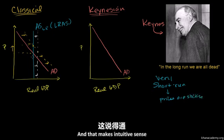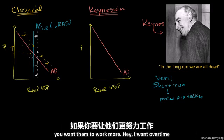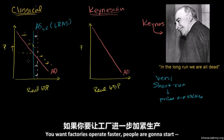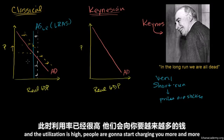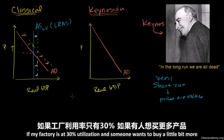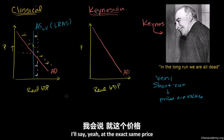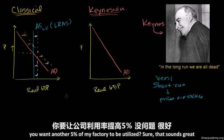And that makes intuitive sense. If the economy is starting to get overheated, people are being overworked — if you want them to work more, they want overtime. If factories are at high utilization, people are going to start charging more. But if I'm unemployed and desperate to work, I'm not going to ask for a pay raise. If my factory is at 30% utilization and someone wants to buy a little bit more, that's not the time I'm going to raise prices. I'll say, yeah, same price — you want another 5% of my factory utilized? Sure, that sounds great.